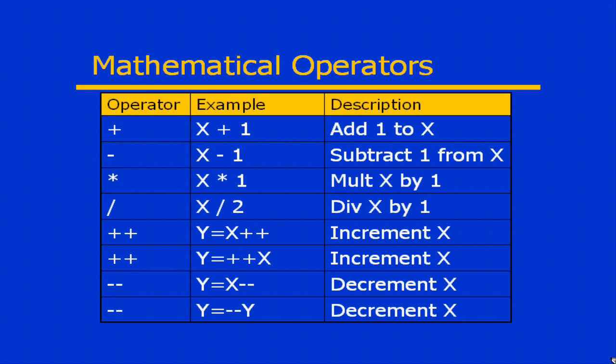For example, assuming that the value of x is 5. If I were to set y equal to x plus plus, what's the value of y? Well, in this example, the value of y would be 5. Because we're assuming that we are assigning before we do the increment. y equals x plus plus means assign, then increment the value of x.